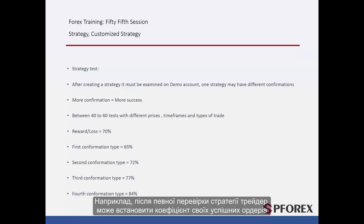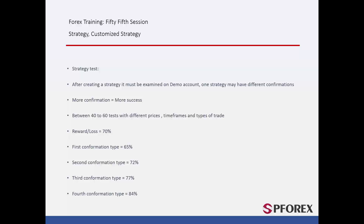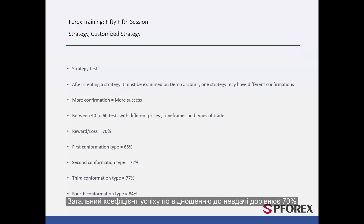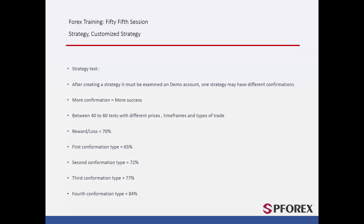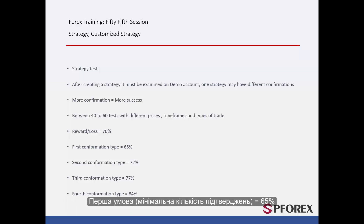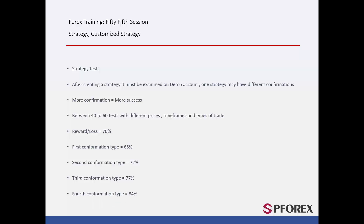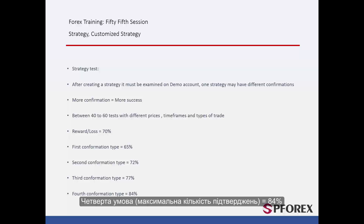For example, after a certain strategy test, a trader could derive the ratio of its successful orders. The overall ratio of success over failure equals 70%. The first condition with minimum confirmations is 65%, the second condition is 72%, the third condition is 77%, and the fourth condition with maximum confirmations is 84%.